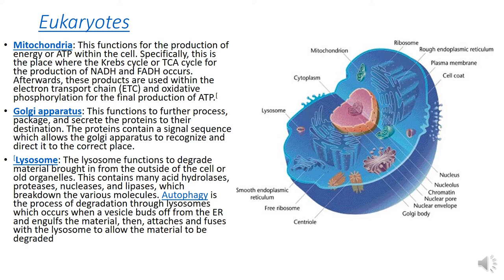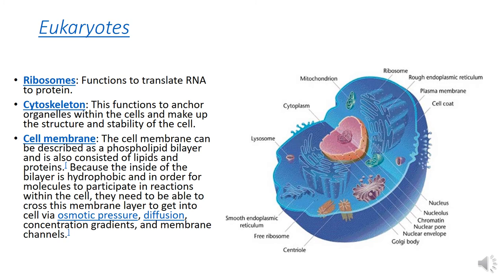Autophagy occurs when a vesicle buds off from the endoplasmic reticulum, engulfs the materials, then attaches and fuses with the lysosomes to allow the material to be degraded. There are two types of endoplasmic reticulum: smooth endoplasmic reticulum and rough endoplasmic reticulum.